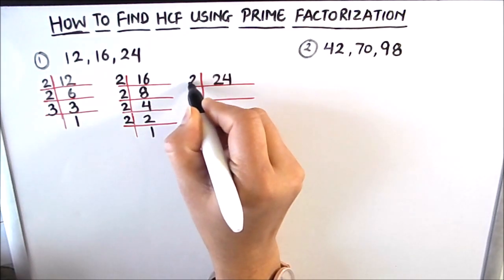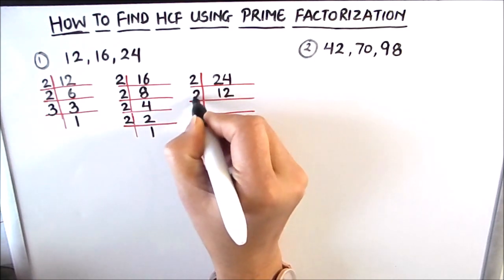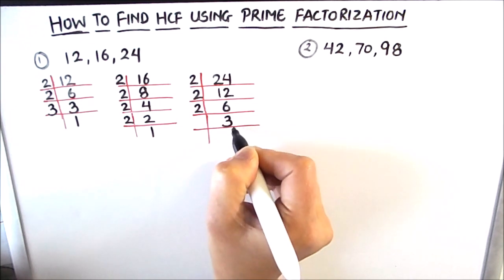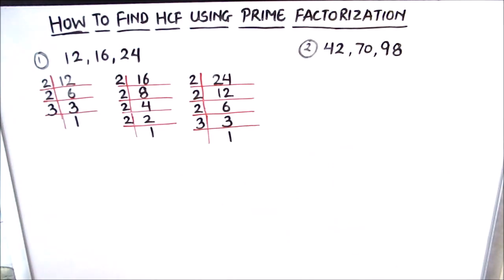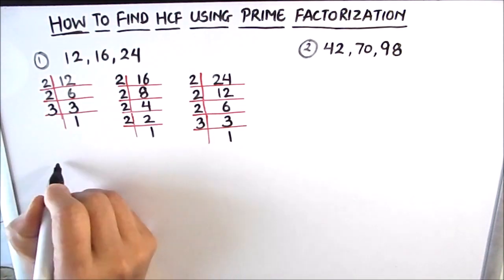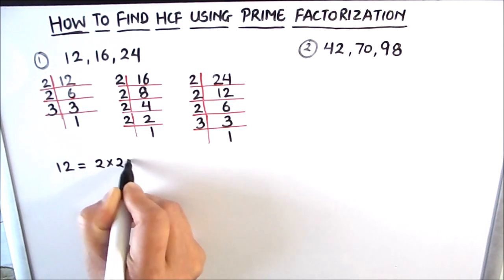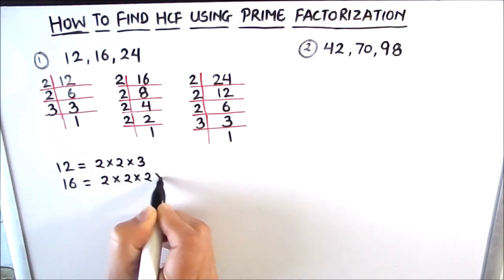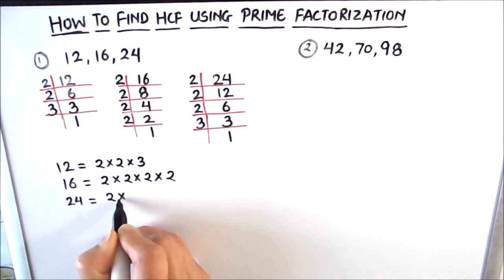For 16 we keep dividing by 2 until we reach 1. Now we'll divide 24 and find its factors. Since it is even we use 2: 2 times 12 is 24, 2 times 6 is 12, 2 times 3 is 6, and 3 is a prime number — 3 times 1 is 3. Now we write the factors of all three numbers separately: 12 = 2 × 2 × 3; 16 = 2 × 2 × 2 × 2; 24 = 2 × 2 × 2 × 3.